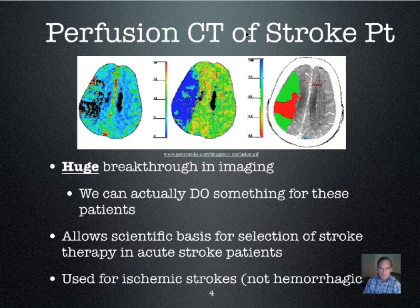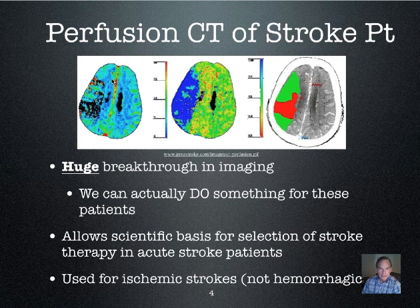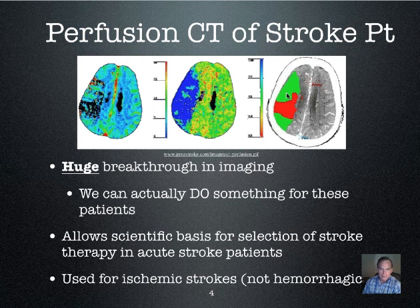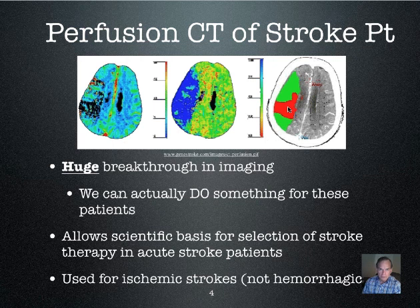This is showing a perfusion CT of a stroke patient. Through computer analysis we are able to determine how much of an area of abnormality in the brain is permanently destroyed and how much is reversibly affected. The red area is what the computer has calculated to be irreversibly affected, stroked-out tissue, and the green is potentially reperfusable and salvageable.